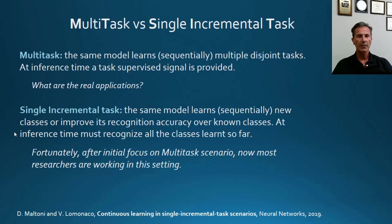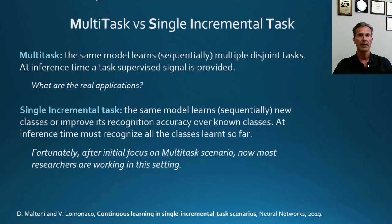For privacy reasons, we would also like to avoid server-side processing or storing raw data on the cloud. Since we are in a continuous learning workshop, I assume you already know the basic concepts: the problem of forgetting, the main continuous learning metrics, and the difference between multitask and single incremental task scenarios. In single incremental task, the model must be able to sequentially learn new classes, new categories, and new instances of the same classes as in the video. We believe this is much more interesting for practical applications.